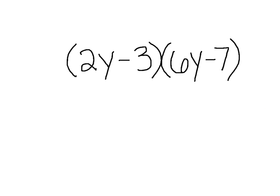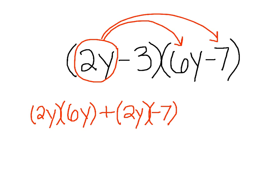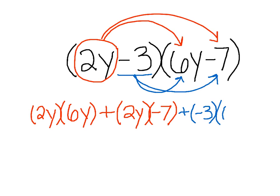Looking at one more example — now we have a coefficient in front of our variables, but everything is still the same. We take 2y and distribute it to each term: 2y times 6y plus 2y times negative 7. Don't forget the negative in front of the 7. We do the same with the second term: negative 3 times 6y plus negative 3 times negative 7.